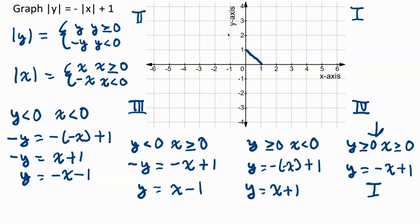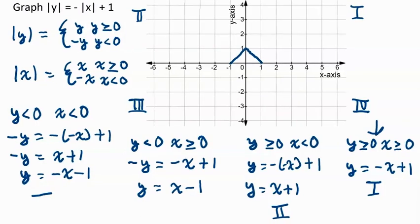In the second quadrant, y is greater than or equal to 0 but x is less than 0, giving us y equals x plus 1 — a function going in that direction. Now, in the third quadrant, both y and x are less than 0, giving us the function y equals negative x minus 1.